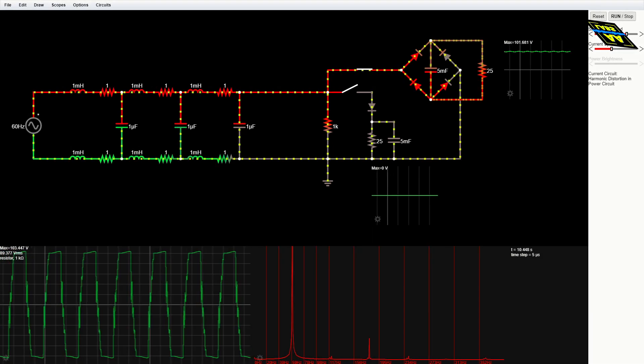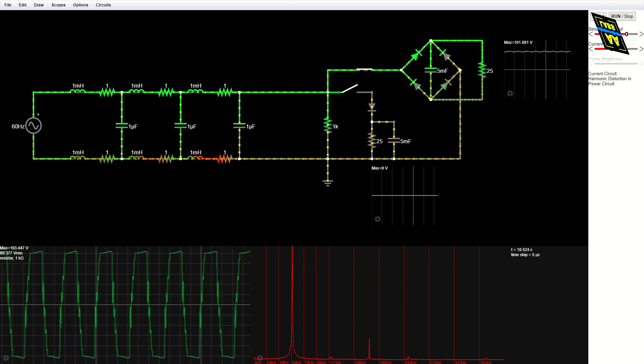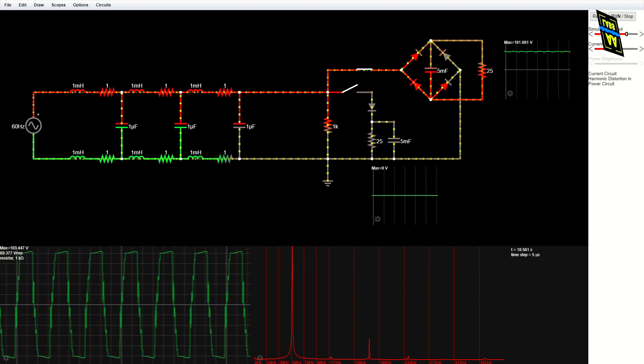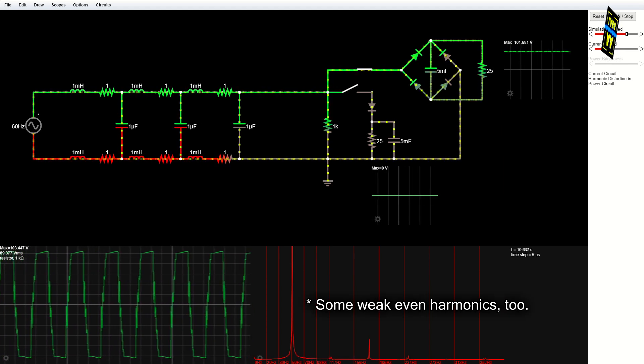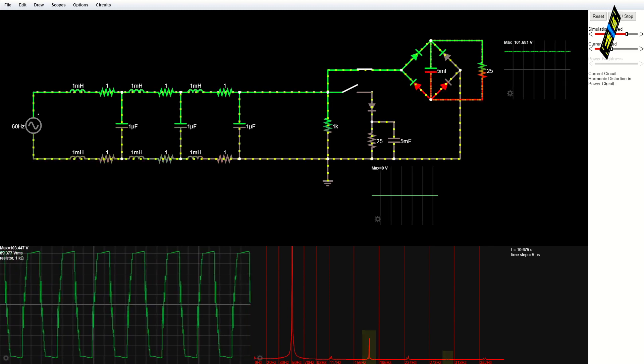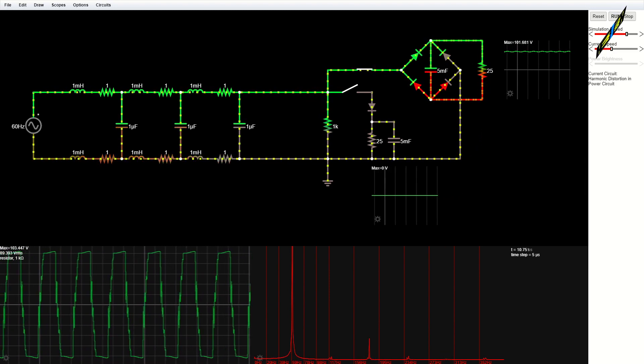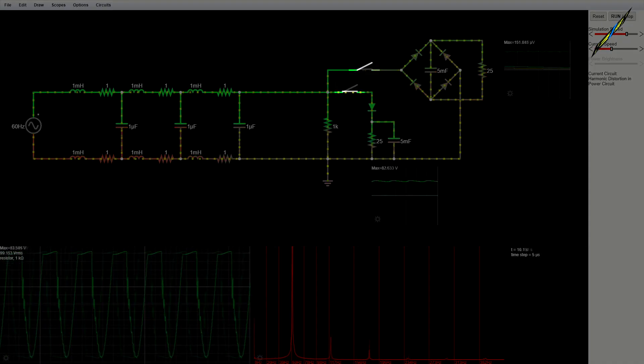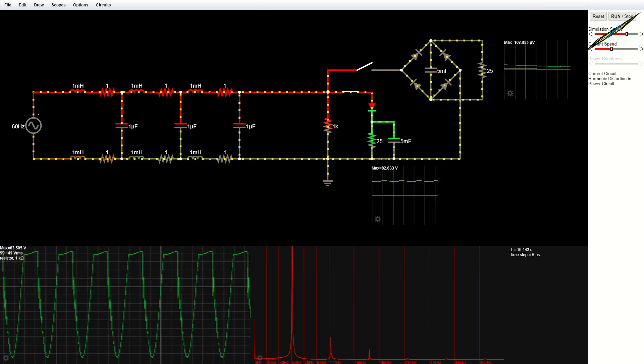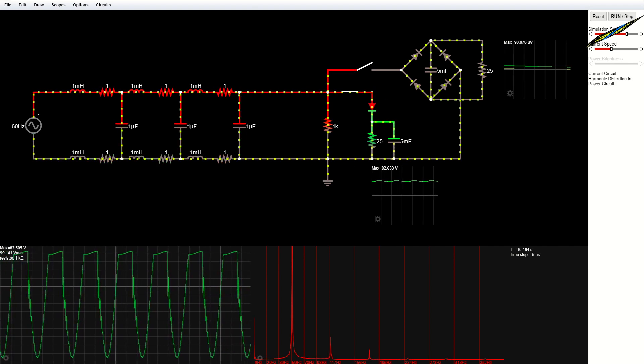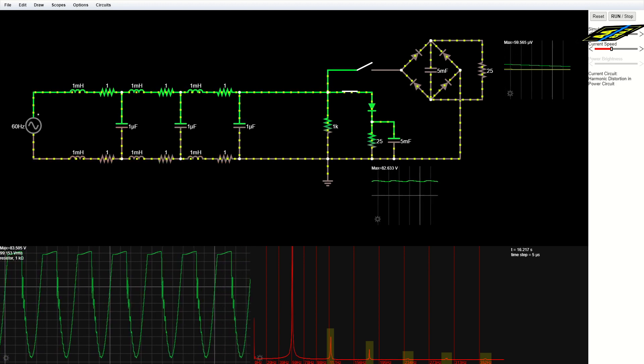However, when we connect the full-wave rectifier, which draws current on both sides of the AC cycle, the 1k load resistor experiences a distorted waveform with only odd harmonics. We're seeing 60 times 3, 60 times 5, etc. When we connect the half-wave rectifier, which draws current on only one side of the AC cycle, the 1k load resistor experiences a distorted waveform with both even and odd harmonics.